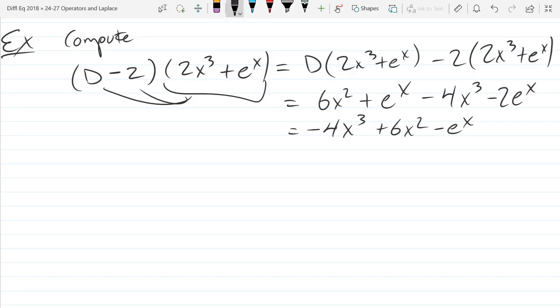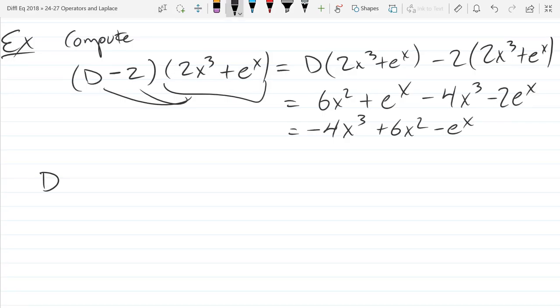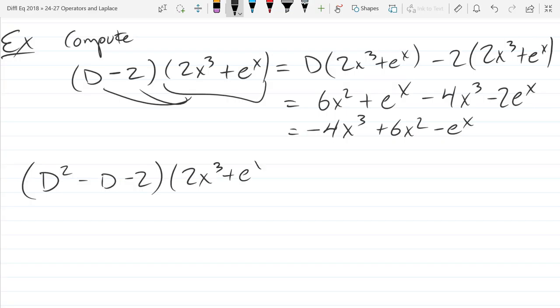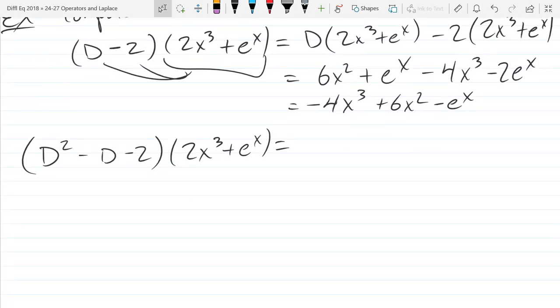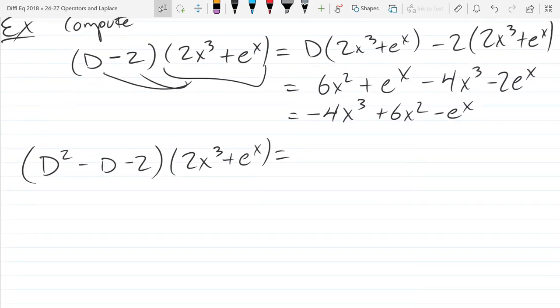I can combine my e to the x's. Let's write negative 4x cubed plus 6x squared minus e to the x. Any questions on that one?